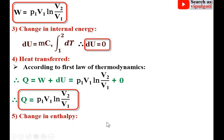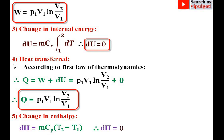Next, change in enthalpy, denoted by dH, equals mcp·dT, that means the change in temperature. Here also, the change in temperature T2 − T1 = 0 for the isothermal process, so dH = 0. Keep in mind: dT equals zero for the constant temperature process, so both the change in internal energy and the change in enthalpy are zero.